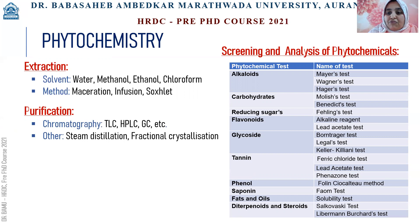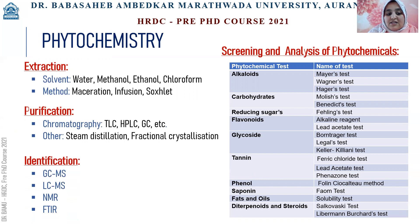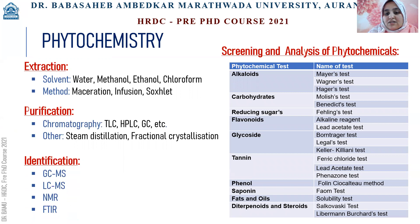When the sample is purified, then the identification of the molecular formula, molecular structure, and functional group can be done by methods like GC-MS, LC-MS, NMR, or FTIR. Then that metabolite is interacted with the insect and its impact on its life cycle is observed.